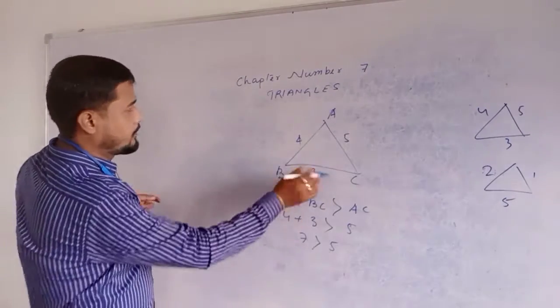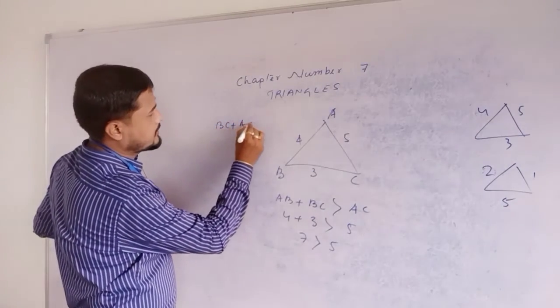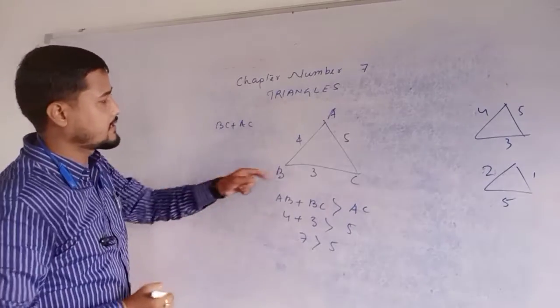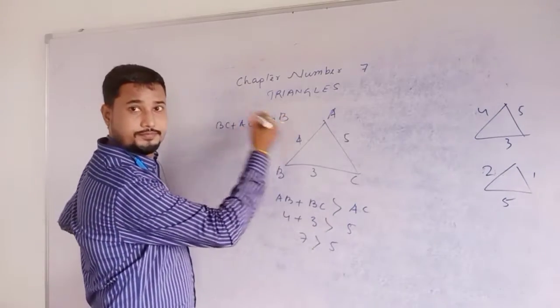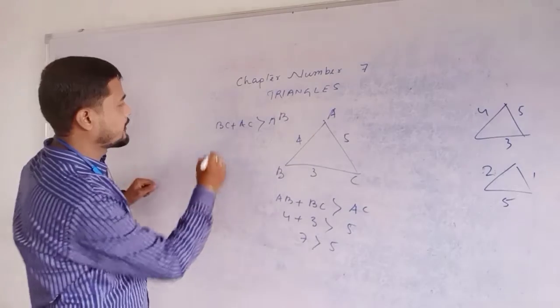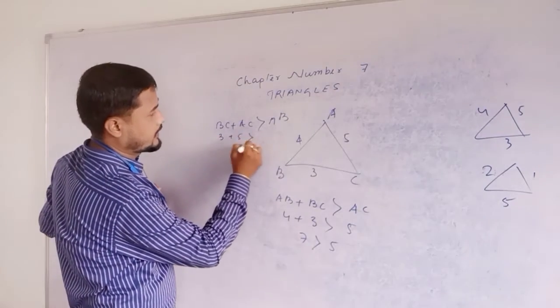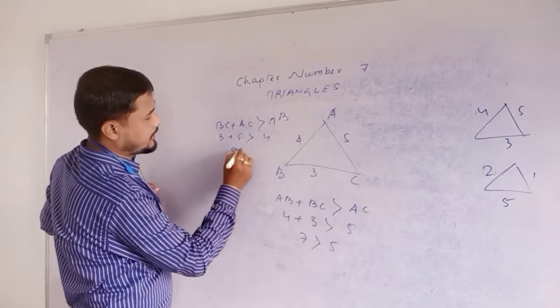Next, BC plus AC. BC plus AC greater than AB or not? BC is 3, AC is 5, greater than 4. 5 plus 3 is 8. 8 greater than 4. Correct.